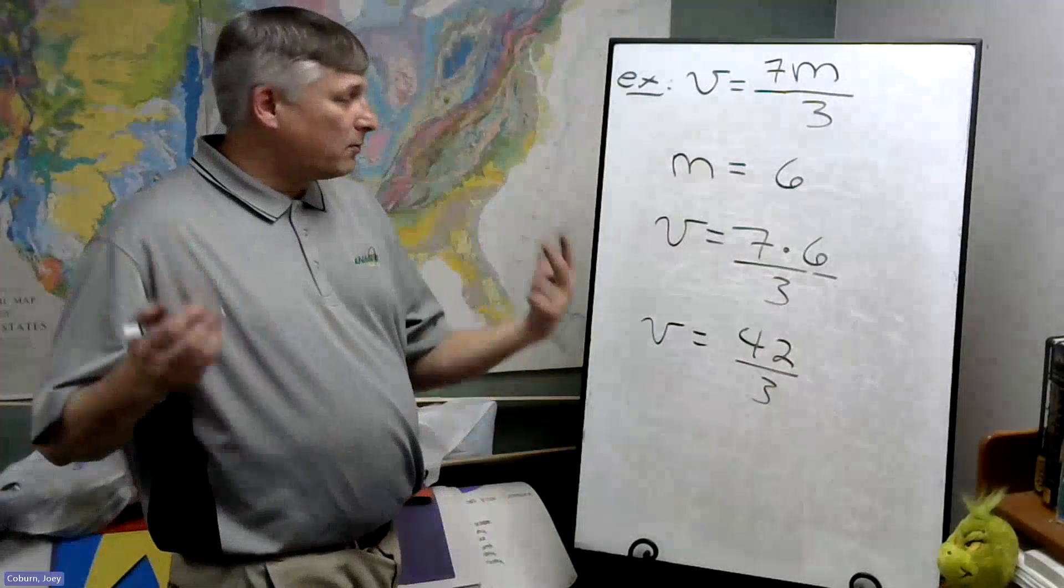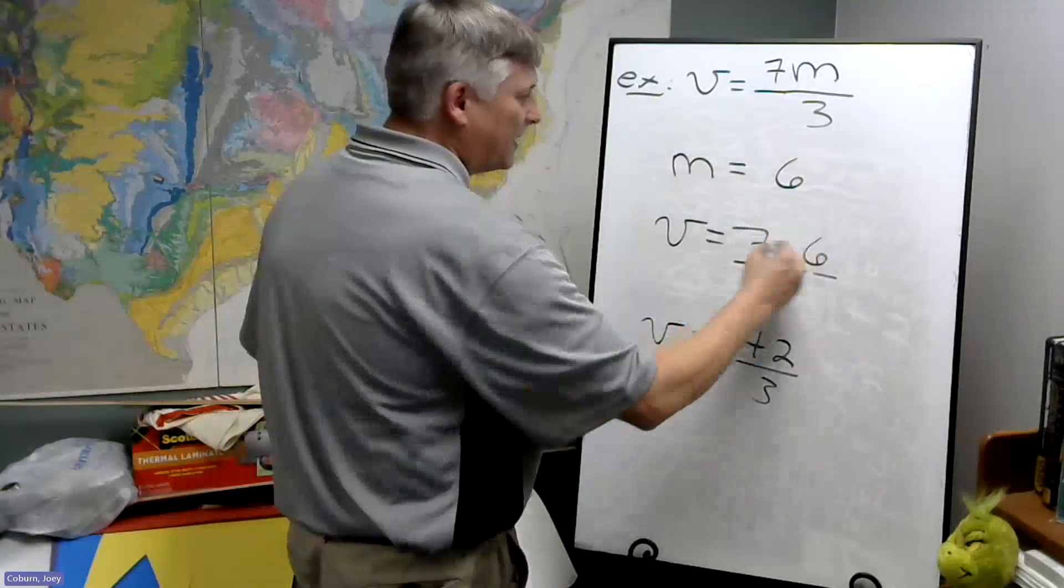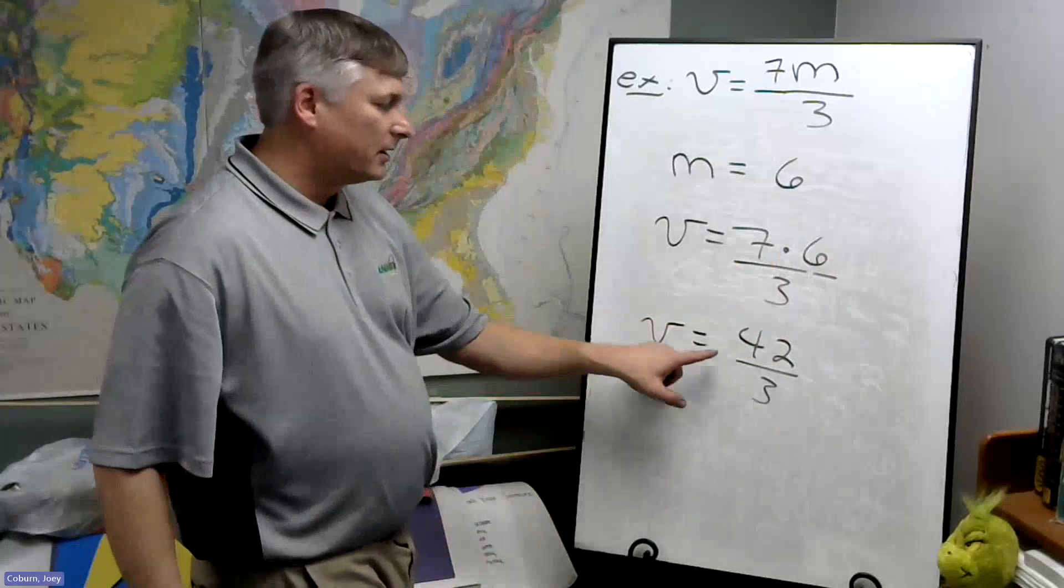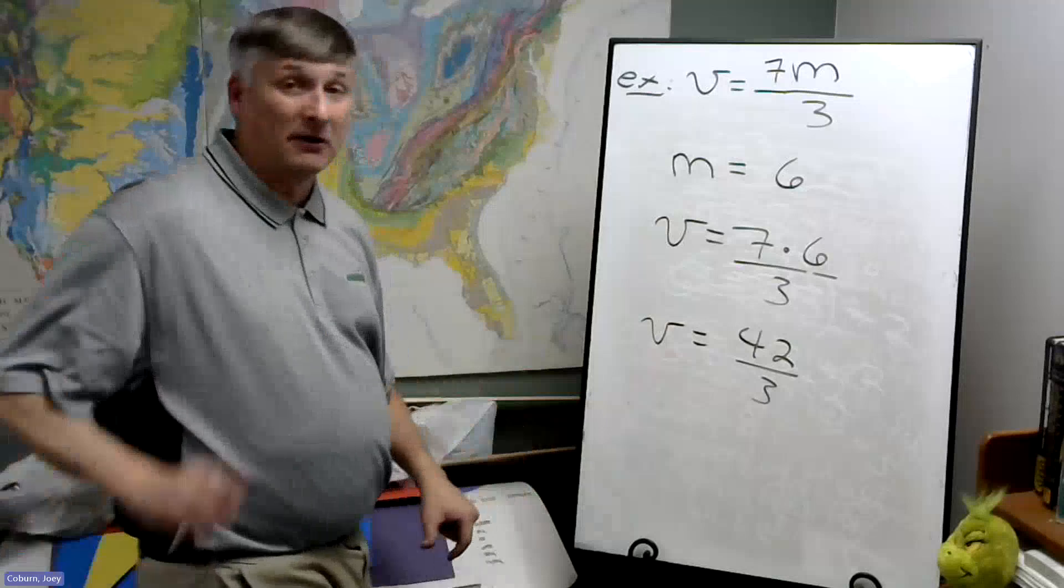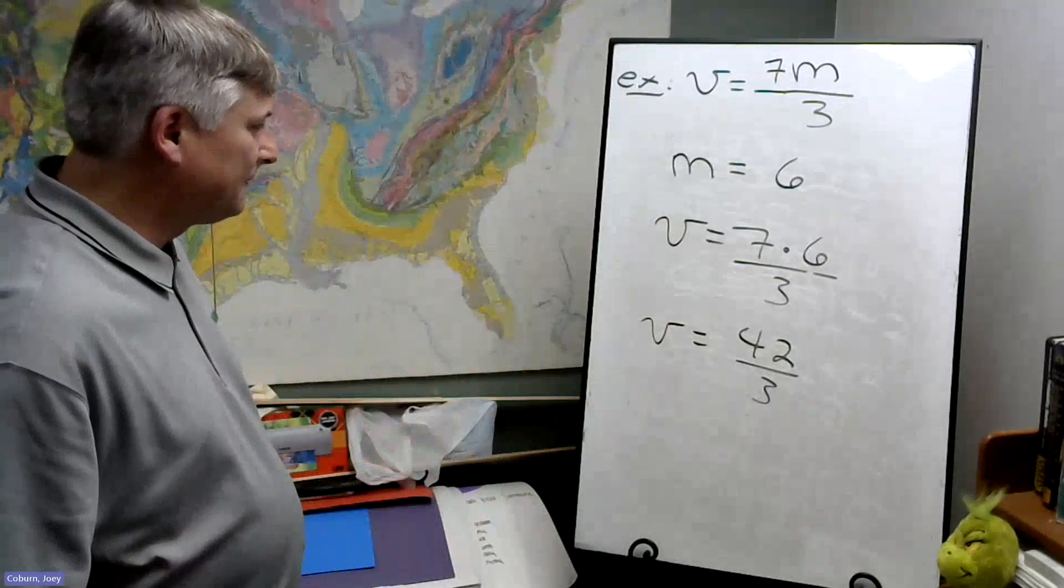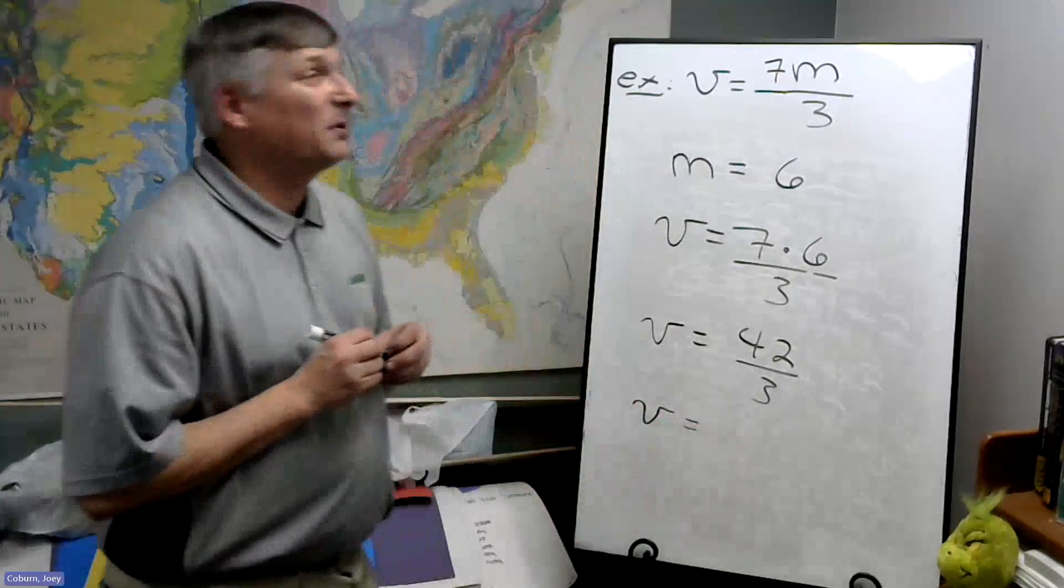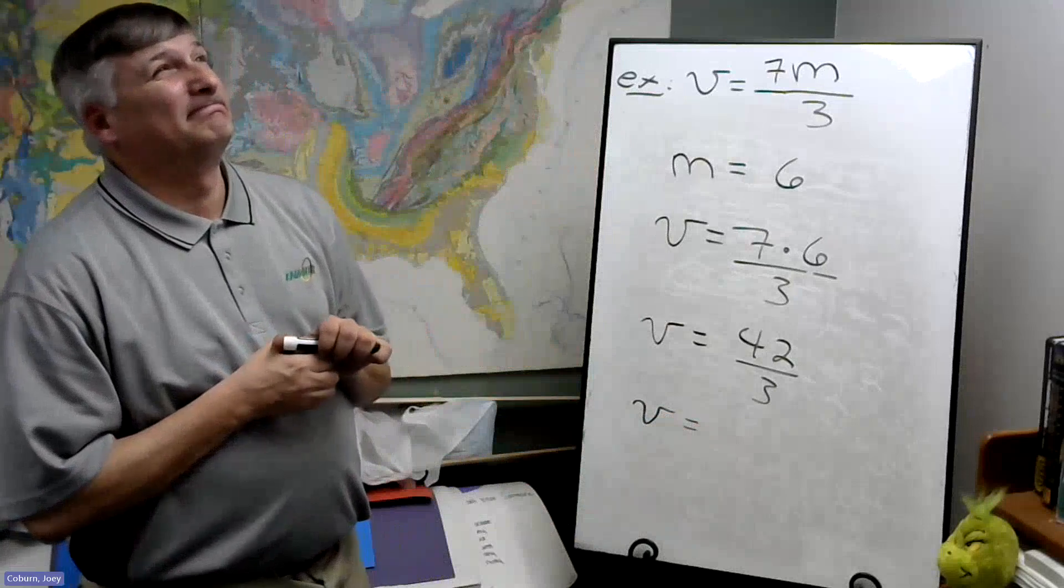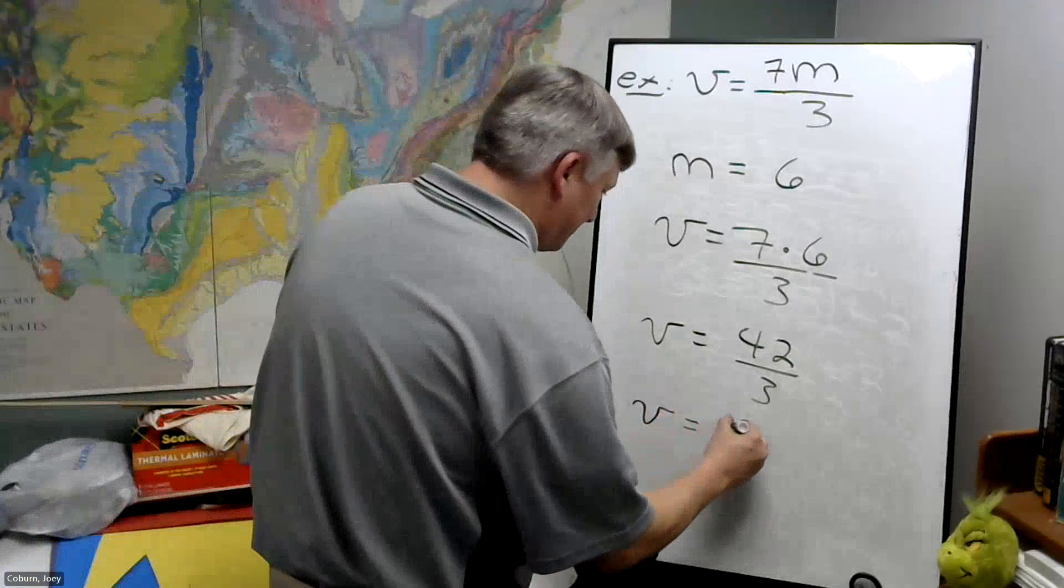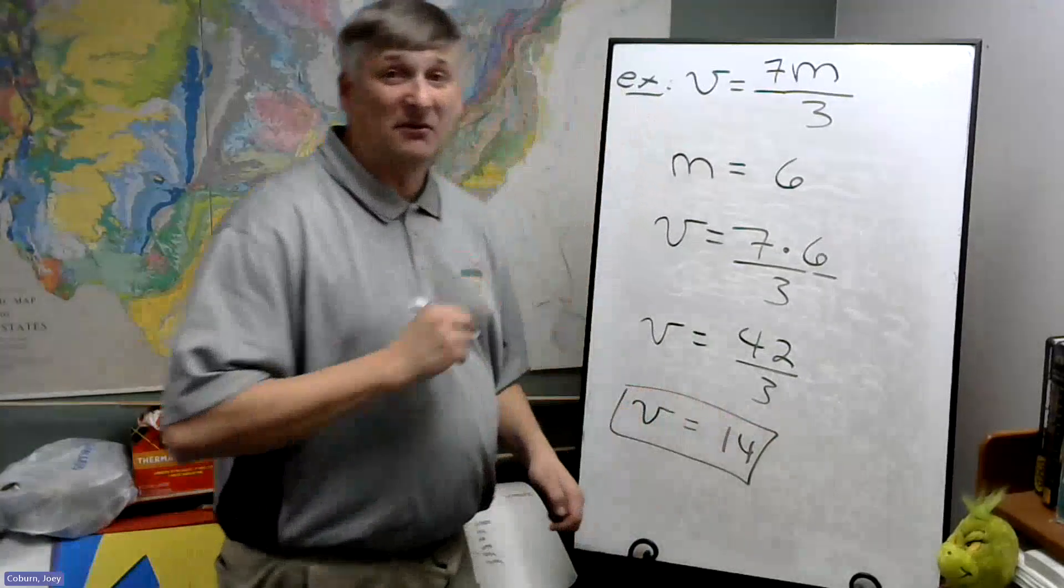And remember, when we work with these kinds of problems where we have arithmetic, we want to make everything in the top and in the bottom single numbers, then divide at the very end. So 42 divided by 3, what's that going to be? That's going to be 14. That's our answer.